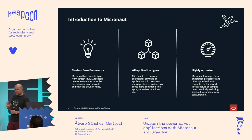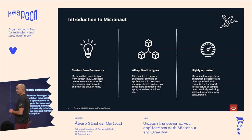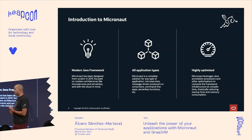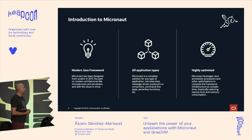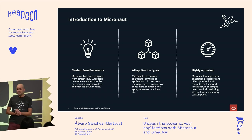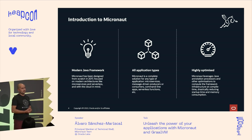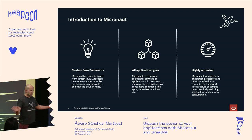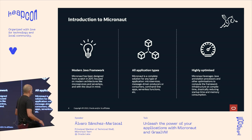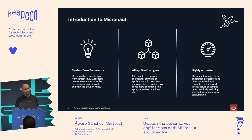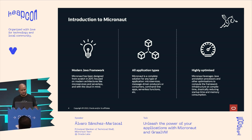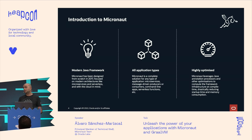There are three ideas I'd like you to get from this presentation. First, Micronaut is a modern Java framework. We started in 2017, focusing on the type of applications being built then. Traditional Java frameworks like JavaEE, JakartaEE, and Spring were all designed 15 to 20 years ago with different deployment models. We had the opportunity to start from scratch and focus on microservices, serverless deployments, and Kubernetes.